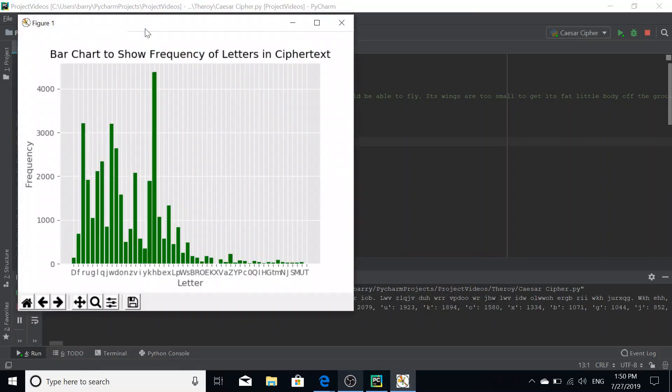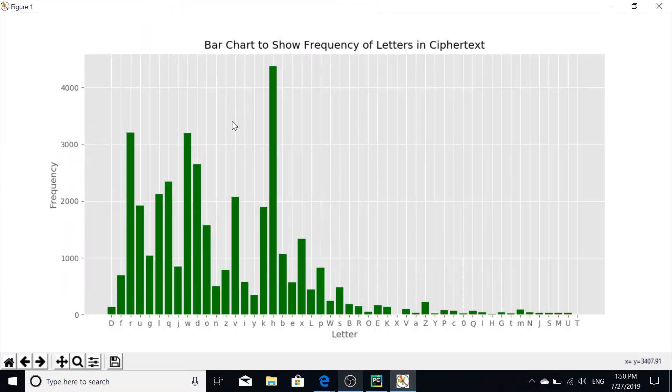We can see that, ignore the capital letters, we can see that lowercase H is the most frequent letter in the cipher text. So what does that tell us? Well, it means that H is meant to be E.